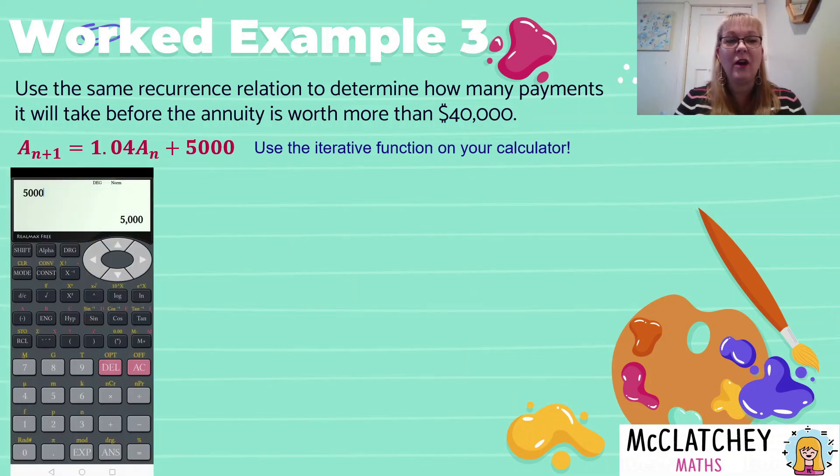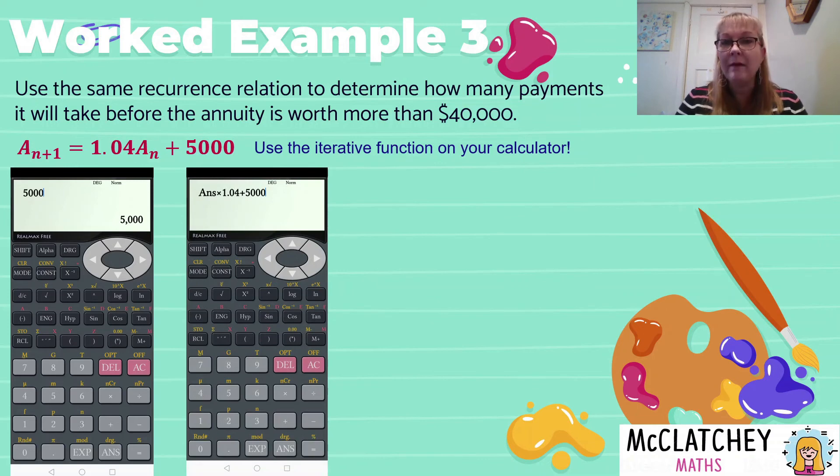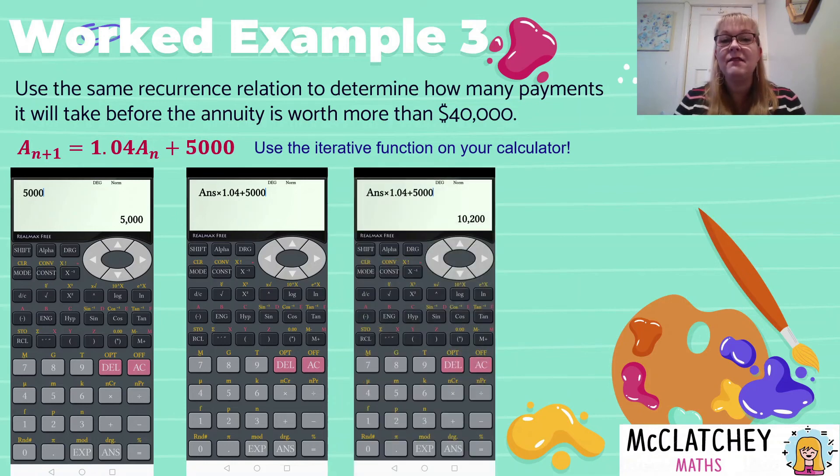So we'll end up with $10,200 after two periods. Then we're going to repeat this process again. In the recurrence relation where we see A N this time, we're actually going to substitute the value of A N with our value from the previous period of 10,200. It's going to slide into the formula, and we're going to add 5,000 at the end. And at the end of the third period, we'll have $15,608 in the bank. Now we've put $15,000 in, three lots of $5,000 payments.